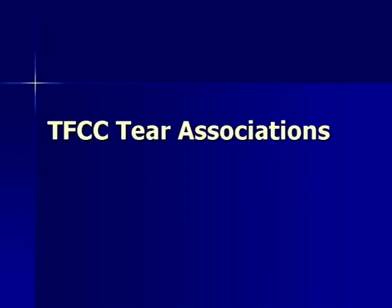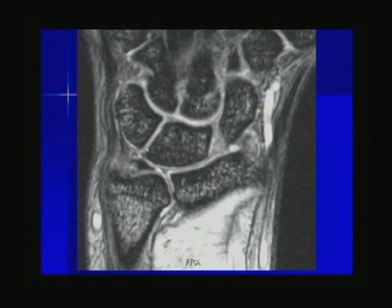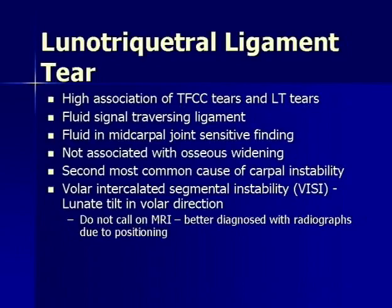TFCC tears are often associated with lunotriquetral ligament tears. Here a central TFCC tear is seen along with the lunotriquetral ligament avulsed off the triquetrum with fluid signal traversing its substance. Lunotriquetral ligament tears have a high association with TFCC tears — look for fluid signal traversing the ligament; fluid in the mid-carpal joint is also a sensitive finding. Unlike scapholunate ligament injuries, there is no associated osseous widening. It is the second most common cause of carpal instability, which can result in a VISI formation where the lunate tilts in a volar direction. This is better evaluated on radiographs as positioning is not standard on MRI.